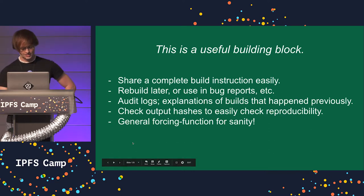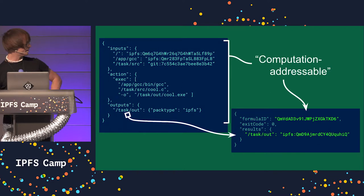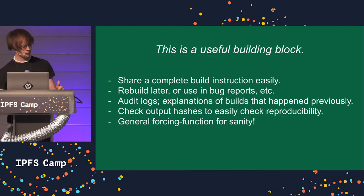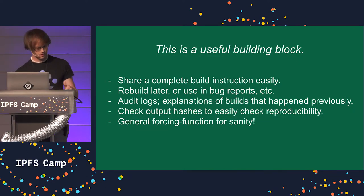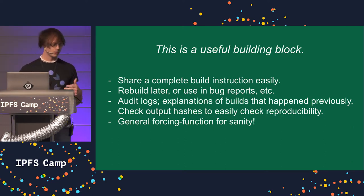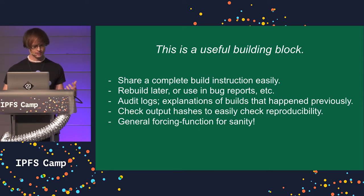Having output hashes at the end of a process is really useful for checking reproducibility, as opposed to assuming that processes are deterministic and reproducible. So this is a general forcing function for sanity — this helps us build sane systems.